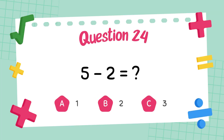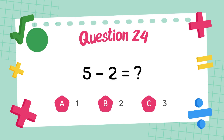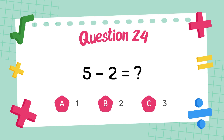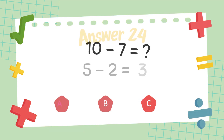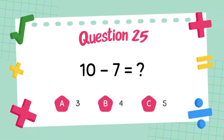What is 5 minus 2? The answer is 3. What is 10 minus 7? The answer is 3.